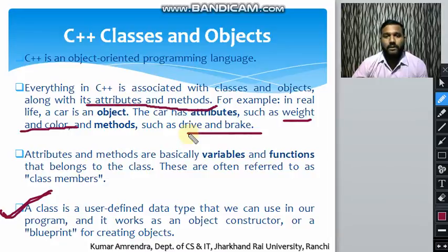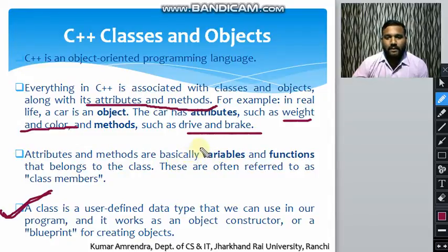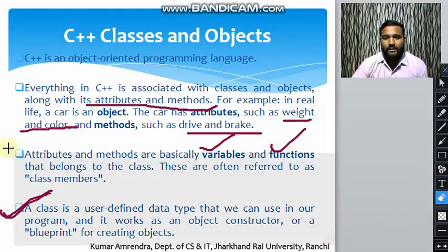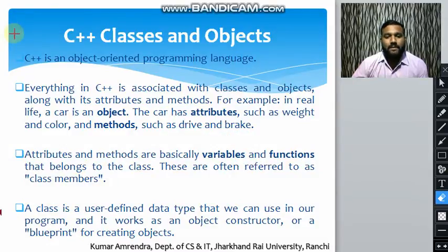Attributes and methods are basically variables and functions that belong to the class and are often referred to as class members. The class members are the member functions and the variables or data members which belong to a class.